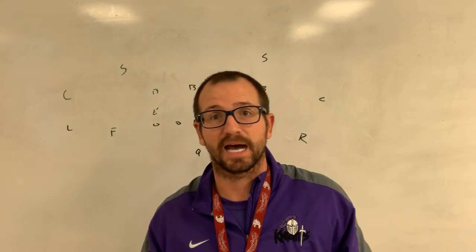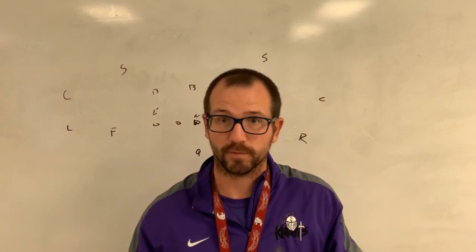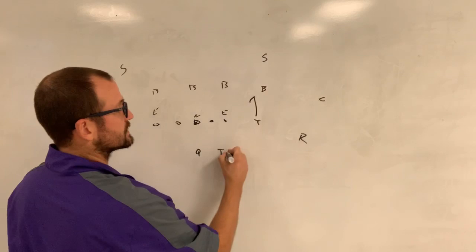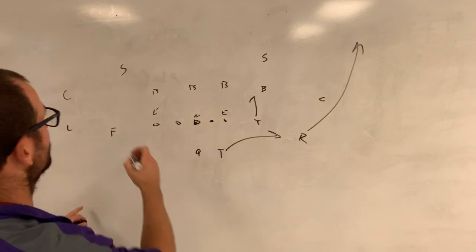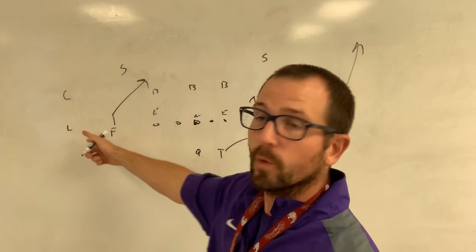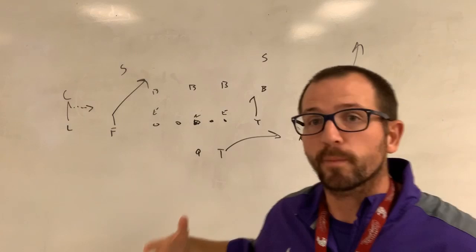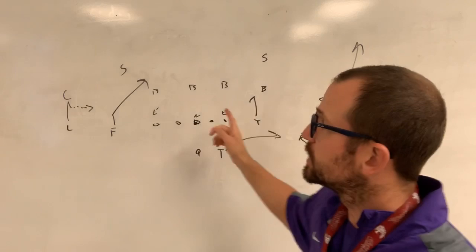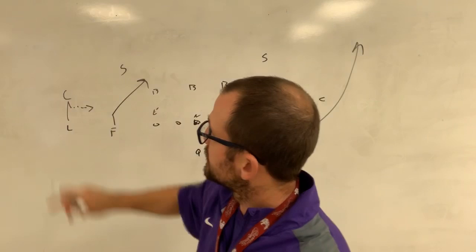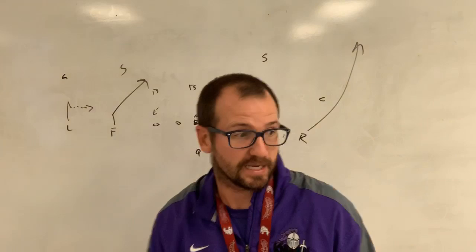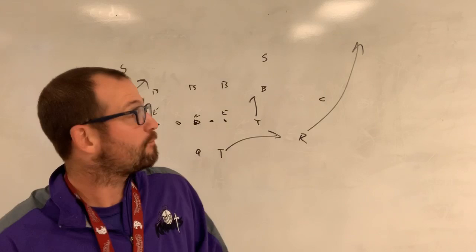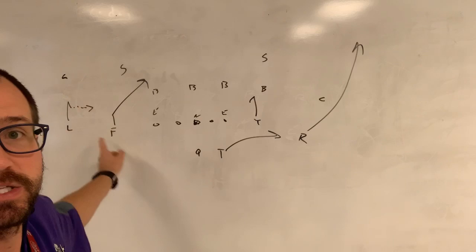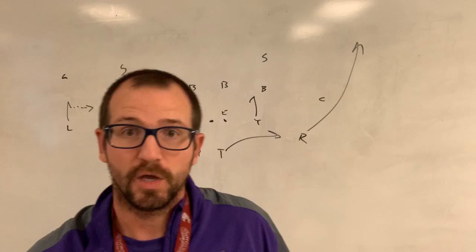Now, for those just joining, I'm going to draw up the Y-Stick concept and show you how defenses can take that away. The Y runs the stick with a mandatory outside release — he has to release outside, that is big time. The F is running a one-step slant, and the L is running a hitch. So the first thing: if they're taking away the stick side, check the backside, because that corner is often playing six yards off. Your quarterback should just take and throw it right to the hitch. If they're taking away the frontside concept, you may not even need a tag — just work the backside slant to hitch.